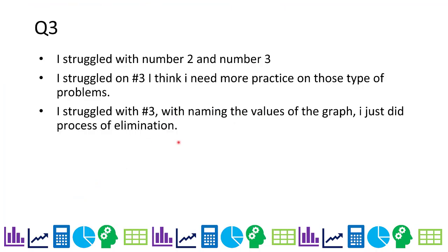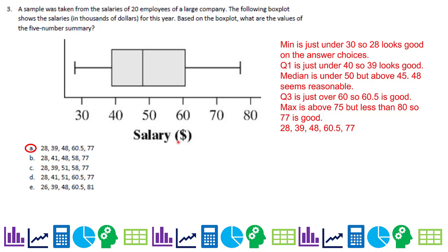Question three: based on the box plot, what are the values of the five-number summary? The first number is always the min — remember that first question with 65, that would be the min; it's not necessarily how low the whisker goes, it's your lowest value. The min here is around 20, so A, B, C, and D are possible. Q1 is just a little under 40, so it's not B or D. The median is under 50 and Q3 is just over 60, and the max is around 77. The answer is A.